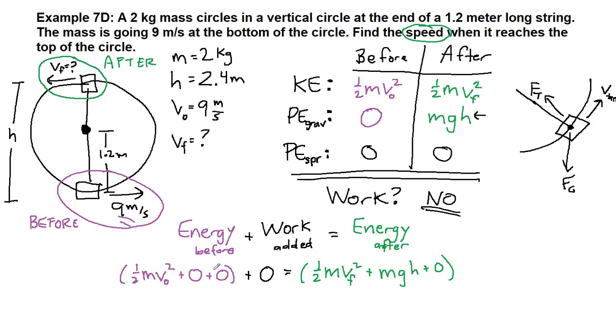All right, so we have put in all of the terms from our yes and no questions here above, keeping in mind that the reason I always write out these zeros is to train myself that we looked for those terms to have this consistent process that we're applying so that we can handle absolutely any new situation we come across. So we have 1/2 times 2 times 9 squared on the left. On the right we have 1/2 times 2 times v final squared plus 2 times 9.8 times 2.4.